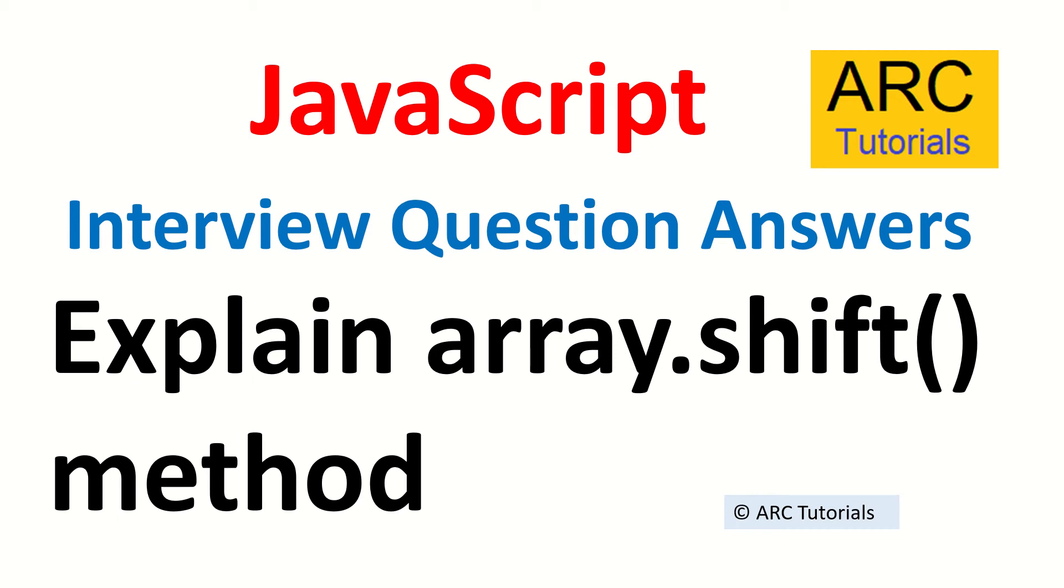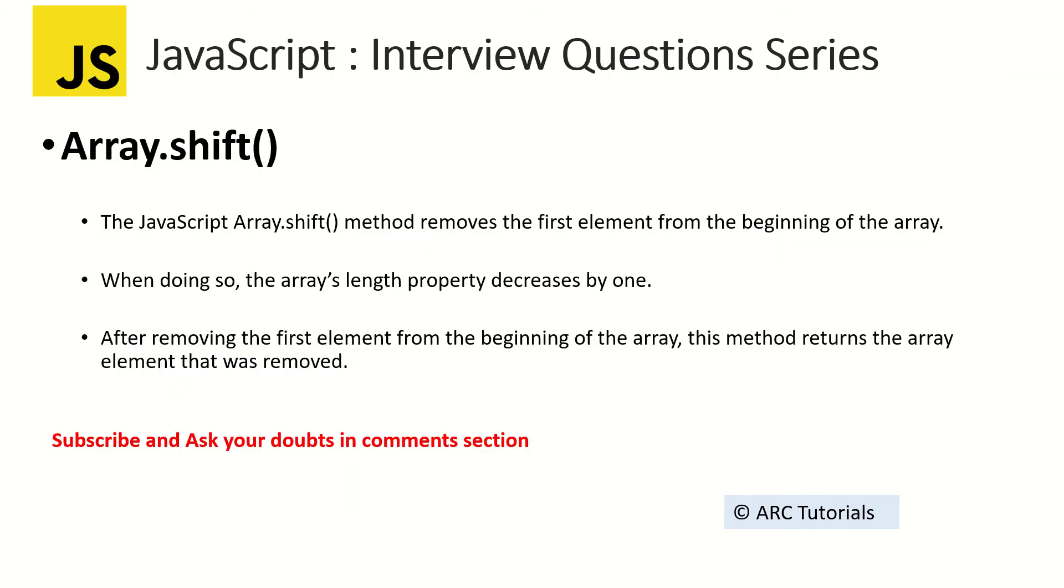it removes the last element from the end of the array. So array.shift() is just the opposite of it, which means it removes the first element from the beginning of the array. These are something that if they ask you one, understand that they'll probably ask you about the other.